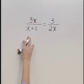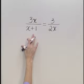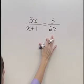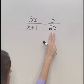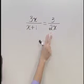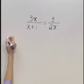Let's start out by getting rid of the fractions and multiply both sides by the lowest common denominator of these denominators. That lowest common denominator would be the product of x plus 1 times 2x. So let's multiply both sides by that.